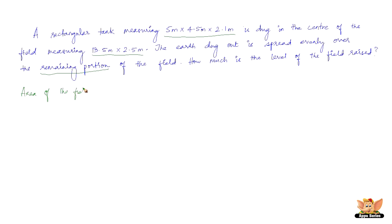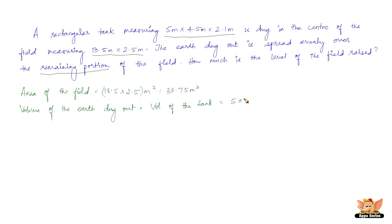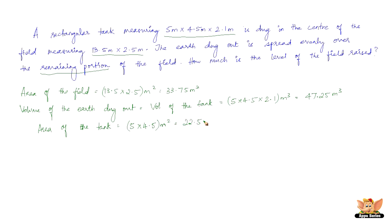Area of the field is 13.5 × 2.5 m², which is 33.75 m². Volume of the earth dug out equals the volume of the tank, which is 5 × 4.5 × 2.1 m³, giving 47.25 m³. Now we have found the volume of the tank.